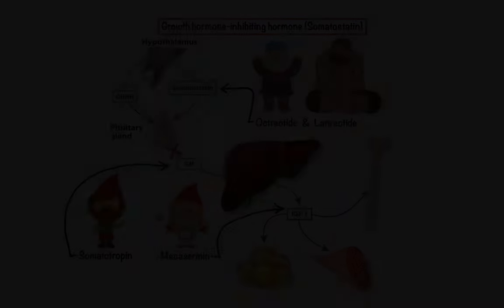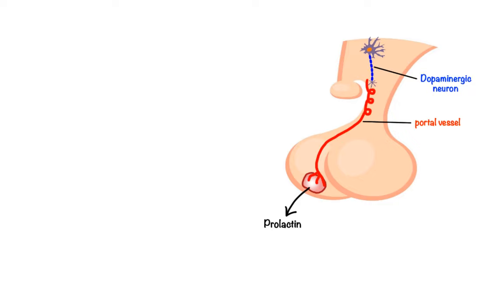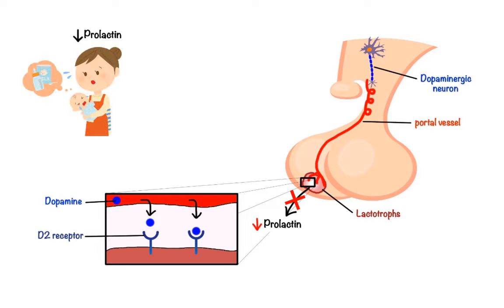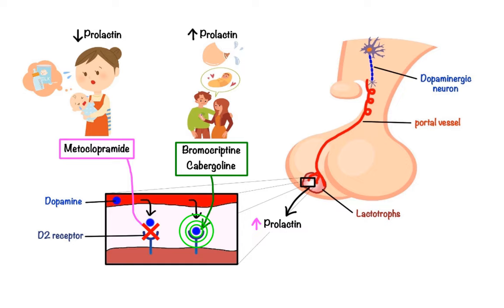Let's move on to discussing drugs that affect prolactin secretion. The secretion of prolactin is regulated by dopamine, secreted by hypothalamic dopaminergic neurons into the anterior pituitary via portal vessels. Dopamine acts on lactotrophs through D2 receptors causing inhibition of prolactin secretion. Pathophysiology of prolactin includes either insufficient prolactin levels, resulting in failure to lactate, or excessive prolactin levels, resulting in galactorrhea and infertility. Two types of drugs treat these disorders: dopamine receptor antagonists such as metoclopramide, which block D2 receptors to increase prolactin secretion, and dopamine receptor agonists such as bromocriptine and cabergoline, which stimulate D2 receptors to inhibit prolactin secretion.